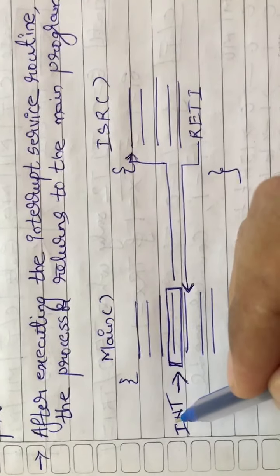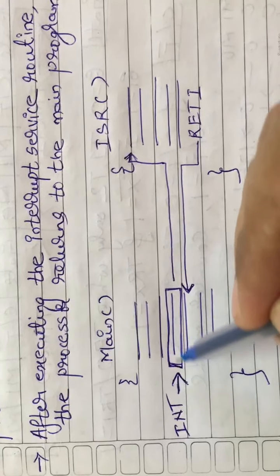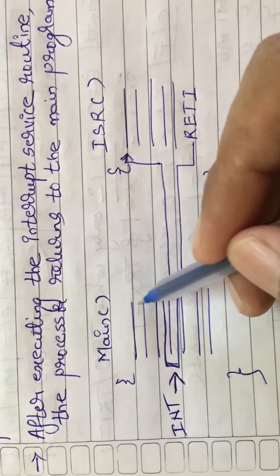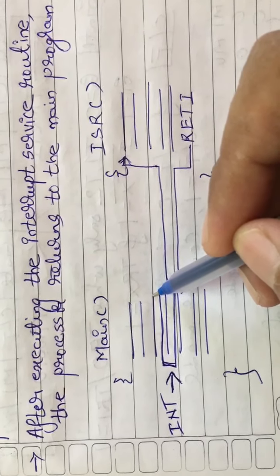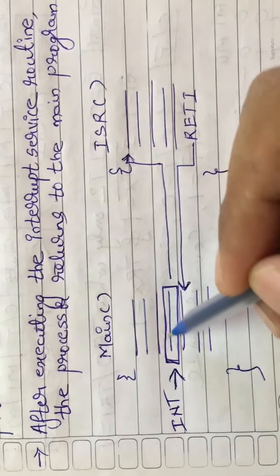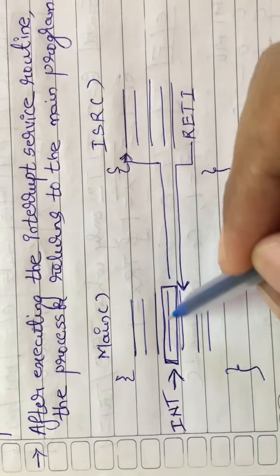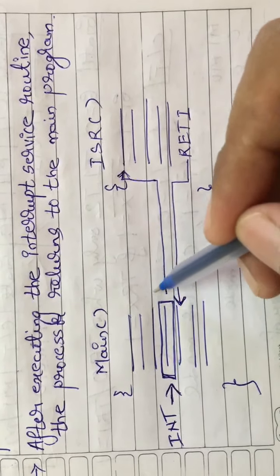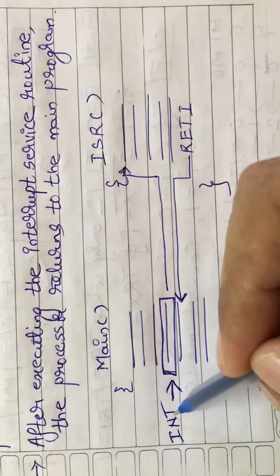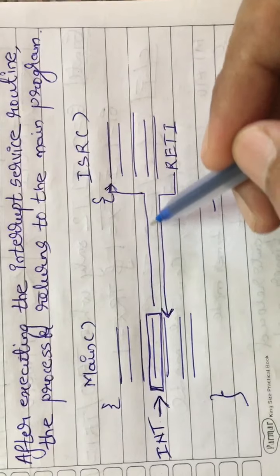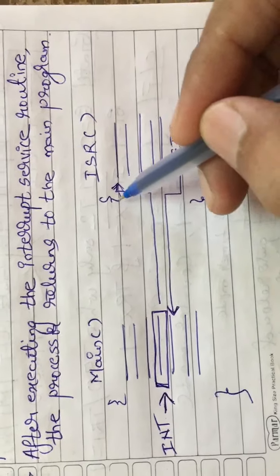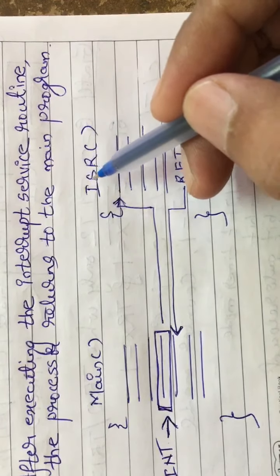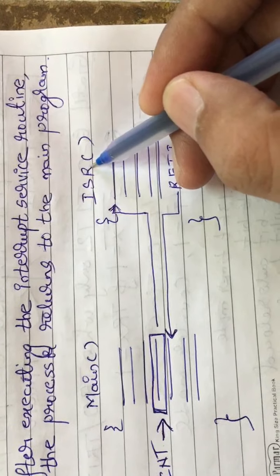What actually is an interrupt? An interrupt is an input to the processor whereby an external device or a peripheral — peripheral is nothing but an input or output device — can inform the processor that it is ready for communication.